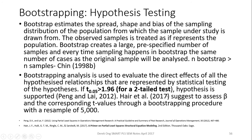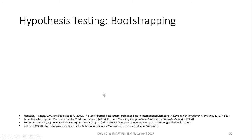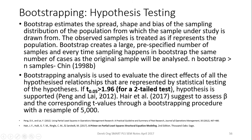Bootstrap analysis is used to evaluate the direct effects and, in some cases, the indirect effects. As long as the T-value is more than 1.96 for a two-tailed test, according to Hair et al., the result is significant. Some people suggest bootstrapping at a resample of 5,000, but you don't really have to go that high — a resample of 500 will do.